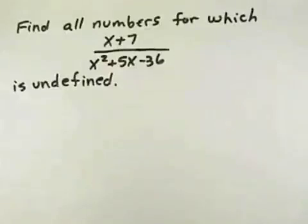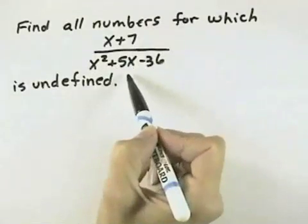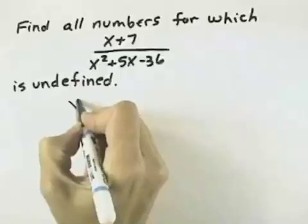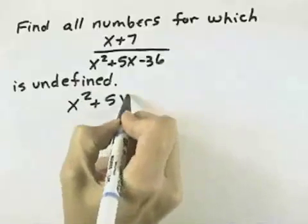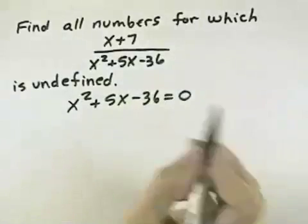That means in this problem, we're going to be looking for all the values that will make the denominator equal to 0. So our expression is x plus 7 in the numerator, and x squared plus 5x minus 36 in the denominator. So what we want to know is when does x squared plus 5x minus 36 equal 0, because that will make the fraction undefined.